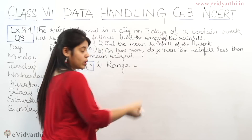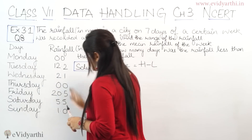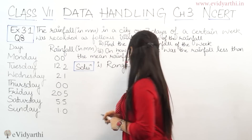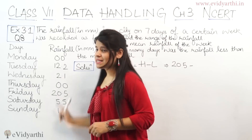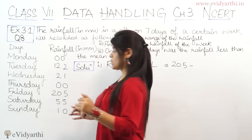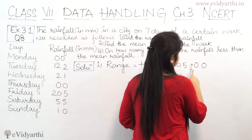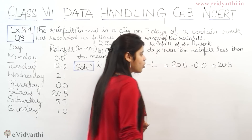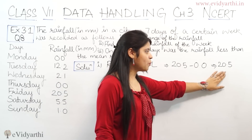The formula for range, as you all know, is highest minus lowest. From the data, the highest number is 20.5. So, range = 20.5 minus the lowest value, which is 0.0 — it appears two times and is the lowest. So, 20.5 minus 0.0 equals 20.5, because anything minus 0 is the same number. The answer to the first part is 20.5.